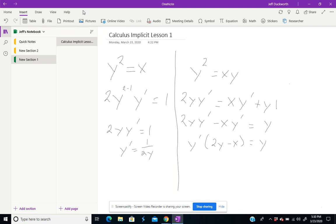And finally, I can divide through by this quantity 2y minus x. So I'm left with y prime, which will be my ultimate derivative, is equal to y over 2y minus x.